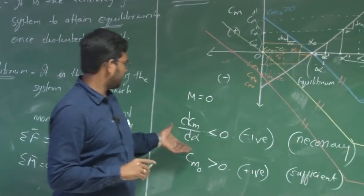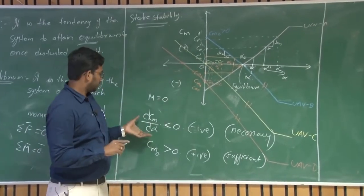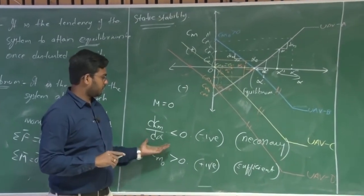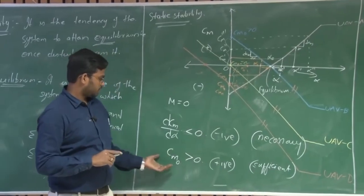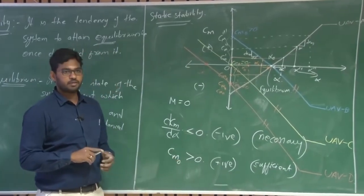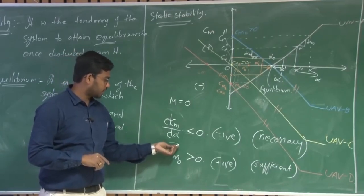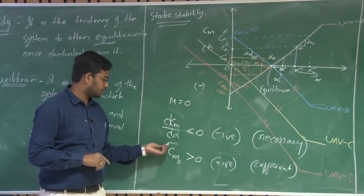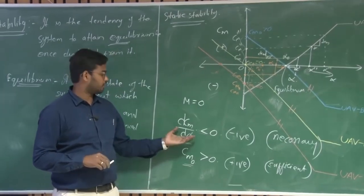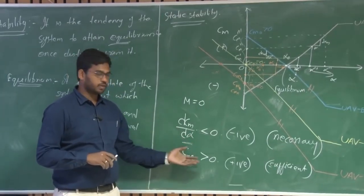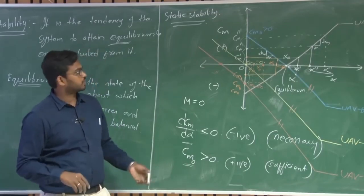The CM variation with the angle of attack should be negative for a statically stable system, and CM naught should be greater than zero. So what should be the CG location in order to have CM alpha less than zero and CM naught greater than zero? Let us look into that.